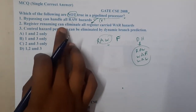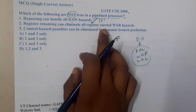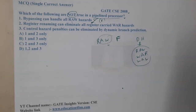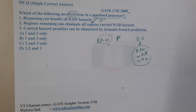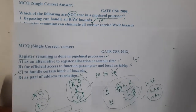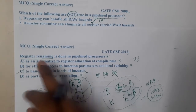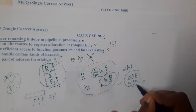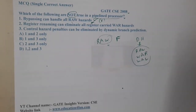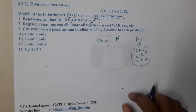Option B says register renaming can eliminate all register-carried WAR hazards. If you recall, we already discussed what hazards can be eliminated using register renaming — this was also a GATE 2012 question. Register renaming resolves issues with write after read (WAR) and write after write (WAW) hazards.